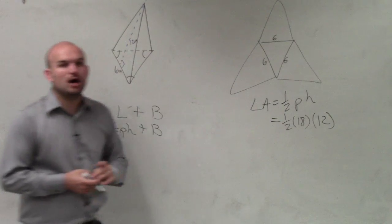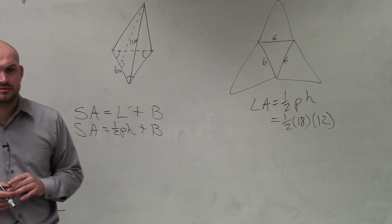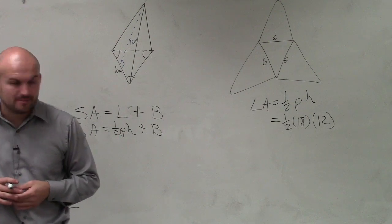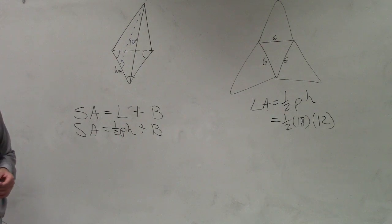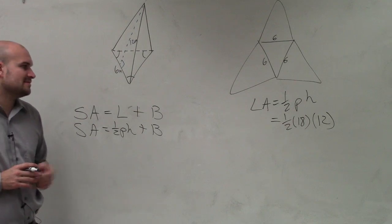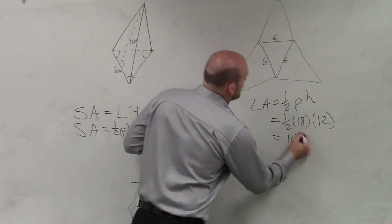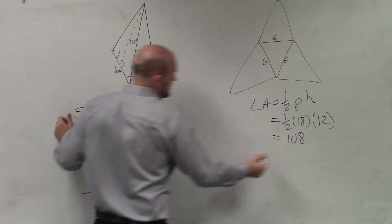So now, all I simply need to do in this case is now just multiply them. So therefore, I have 1 half times 18, which is 9, and 9 times 12, which is 108. And this is in inches, so that's going to be inches squared.